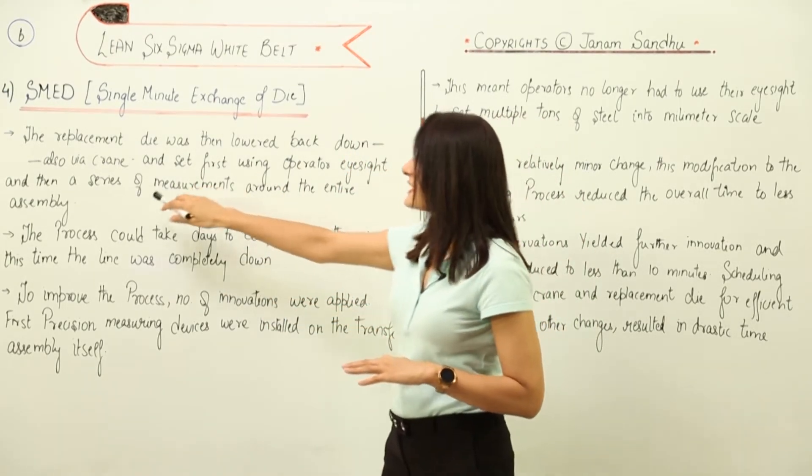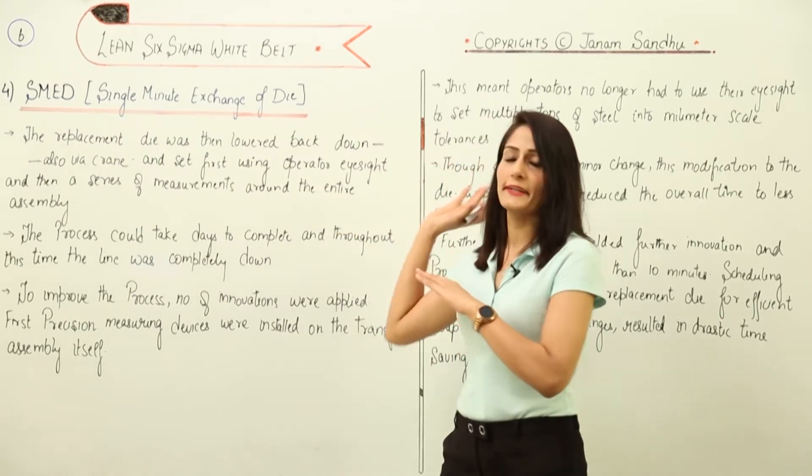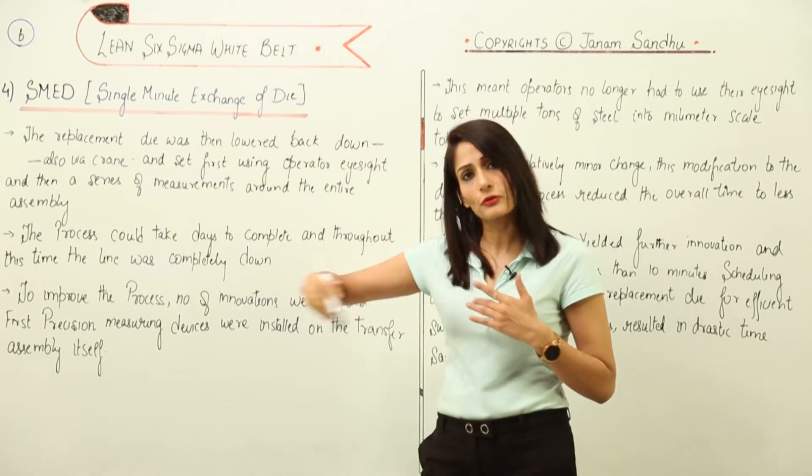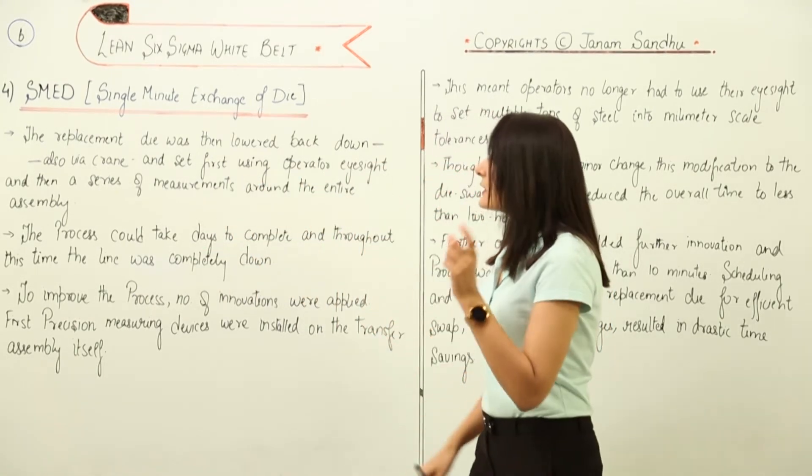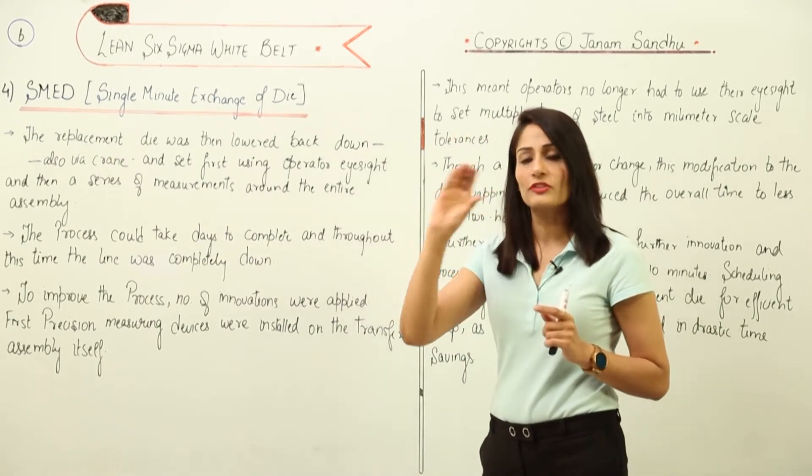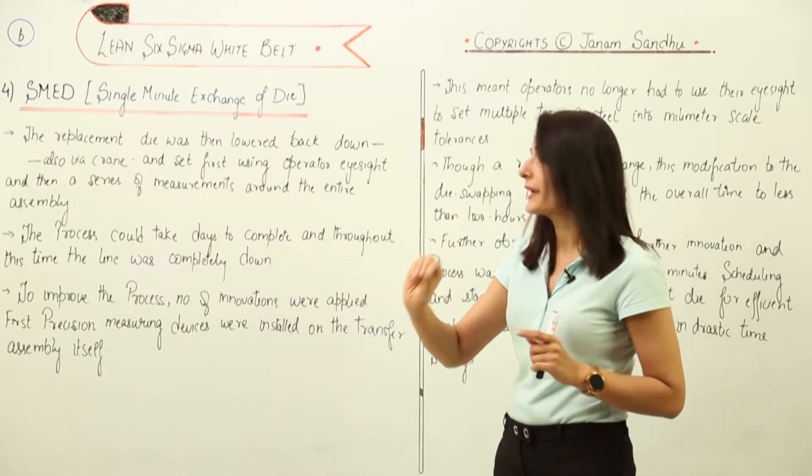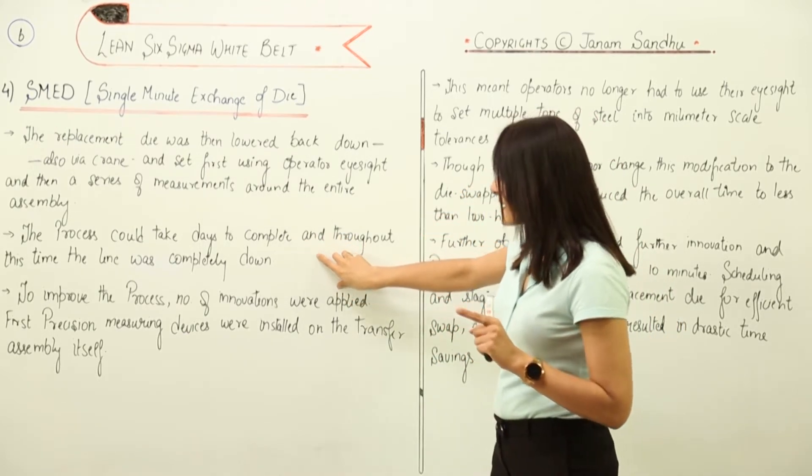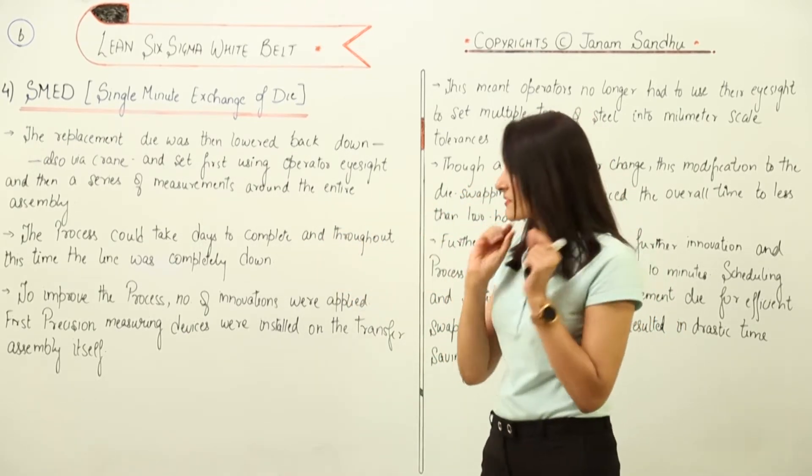The operators used to do it manually and then a series of measurements around the entire assembly line had to be done. The process could take days to complete to just set the precision so everything is very precise and accurate. Throughout this time, the line was completely down.